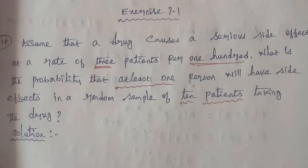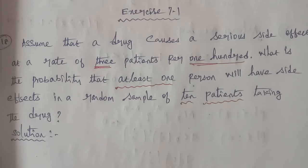Hi students, I am Gopinath and I will solve Business Maths chapter number 7, probability distribution, question number 18. Assume that a drug causes a serious side effect at a rate of 3 patients per 100. What is the probability that at least 1 will have a side effect in a random sample of 10 taking the drug?